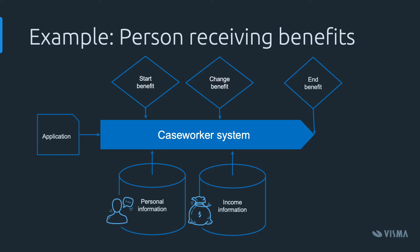For you all to get a better understanding, I have prepared an example case of a system I have previously worked on. This is a caseworker system where a person can send an application to receive benefits. Based on that application, benefit data is sent to the caseworker system — either the application is approved and a benefit starts, or it could change and eventually end. The caseworker system also checks the personal and income information of the applicant to ensure the data received is correct.